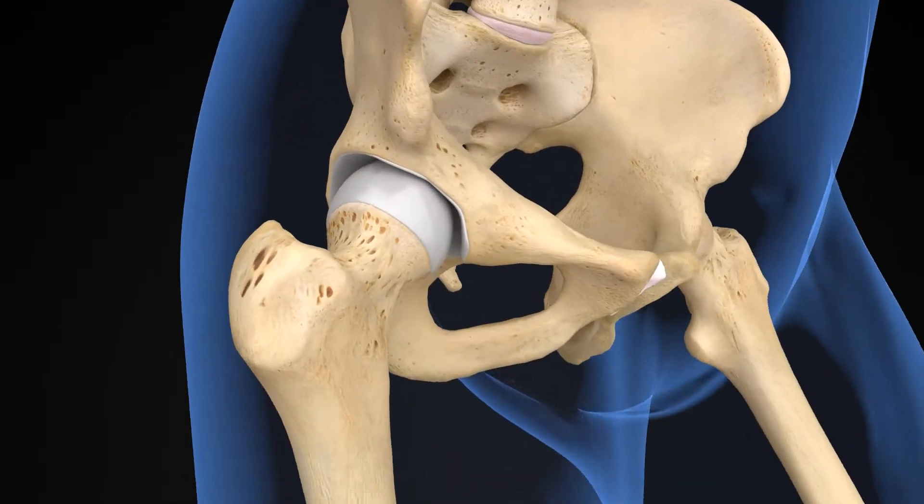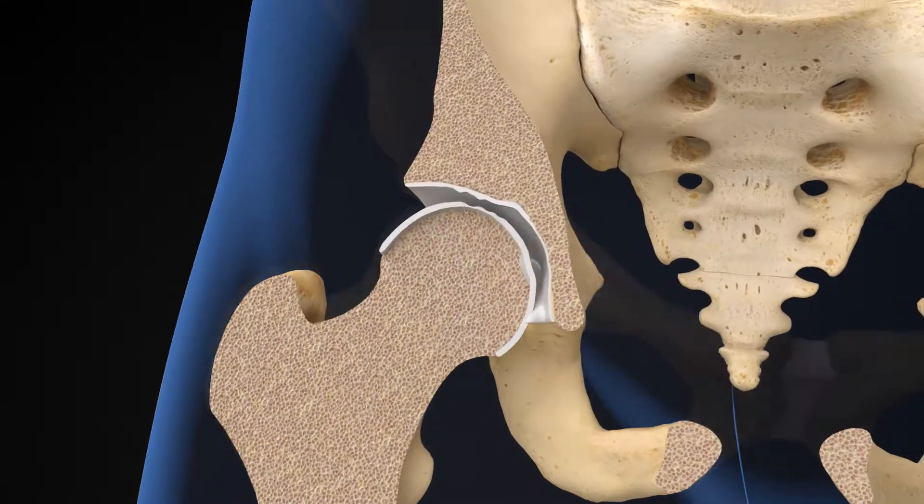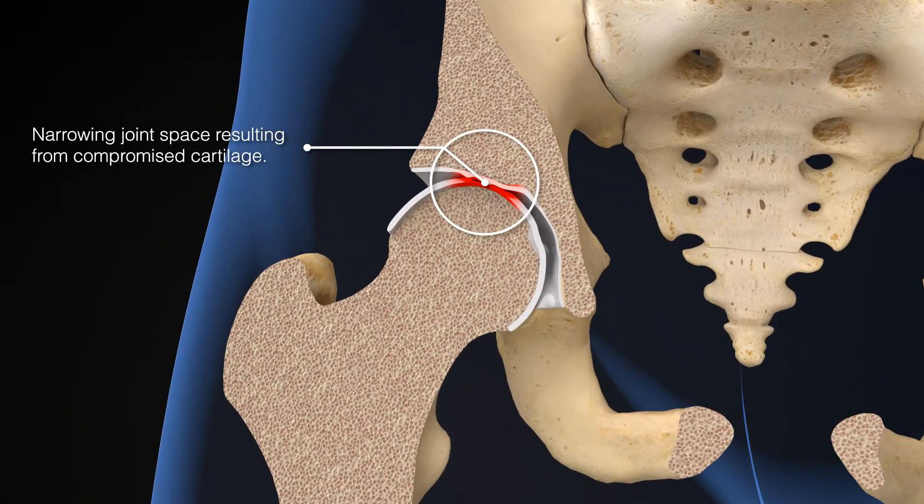Hip osteoarthritis is a condition where cartilage in the hip joint degenerates, leading to inflammation, pain, and loss of mobility in the hip joint.